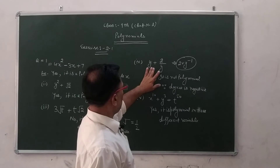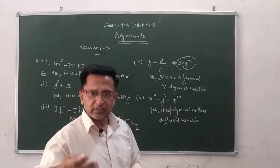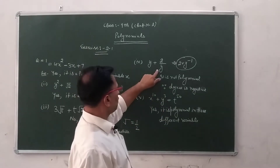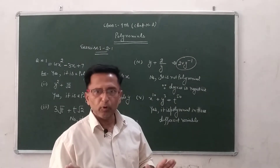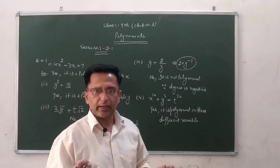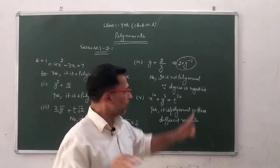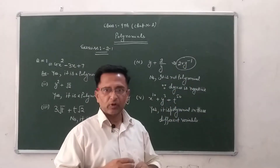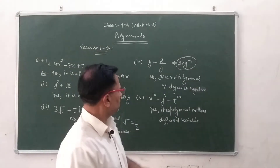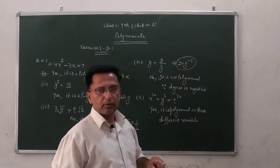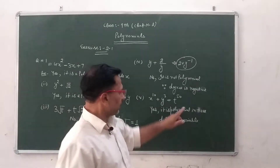The next expression is y plus 2 upon y — y is in the denominator. When we bring it to the numerator, the power of y becomes minus 1. The exponent of a polynomial must always be non-negative. Since the exponent is negative here, therefore it is not a polynomial.